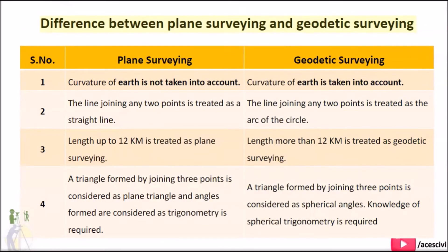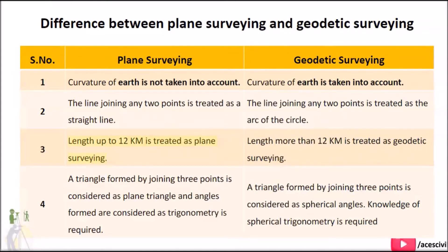Difference between plane surveying and geodetic surveying: 1. Curvature of Earth is not taken into account in plane surveying, whereas curvature of Earth is taken into account in geodetic surveying. 2. The line joining any two points is treated as a straight line in plane surveying, whereas it is treated as an arc of a circle in geodetic surveying. 3. Length up to 12 km is treated as plane surveying; length more than 12 km is treated as geodetic surveying.